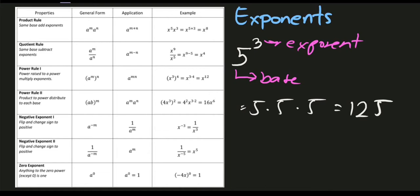That is the concept of exponents. Another example: we have 2 times 2 times 2 times 2. Since we are multiplying 2 four times by itself, that means 2 times 2 times 2 times 2 is actually equal to 2 raised to 4.